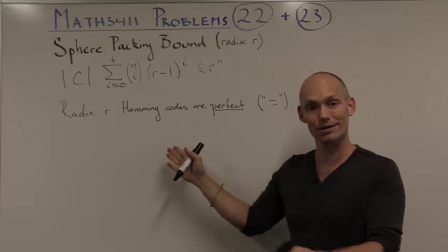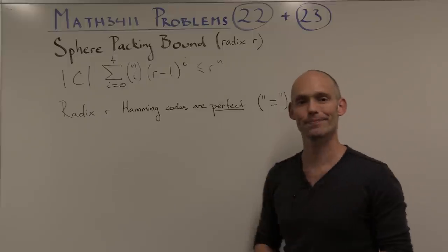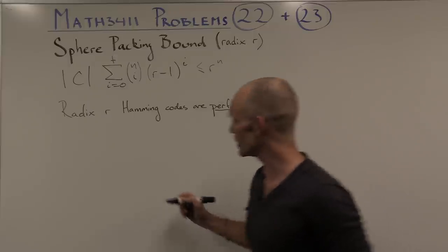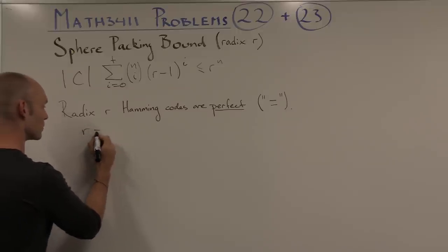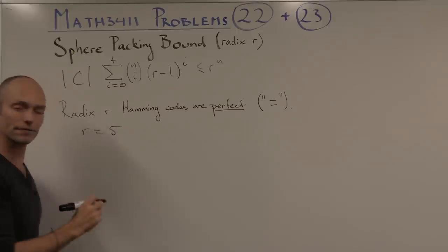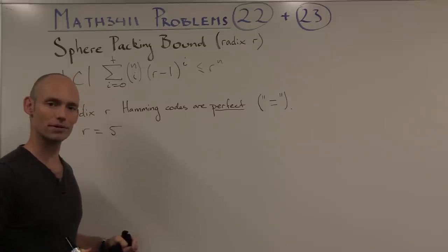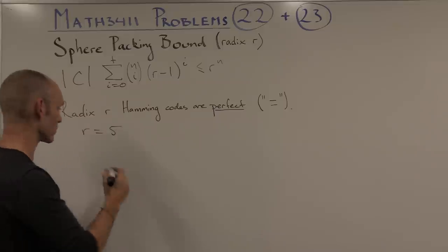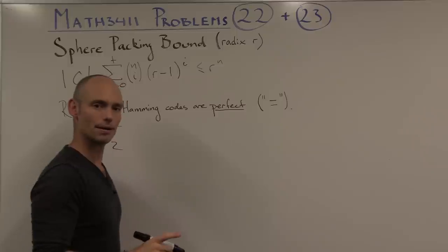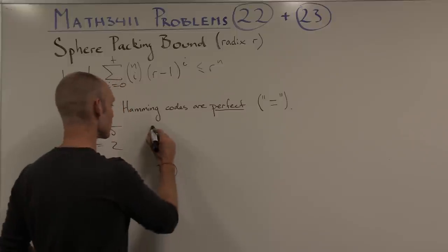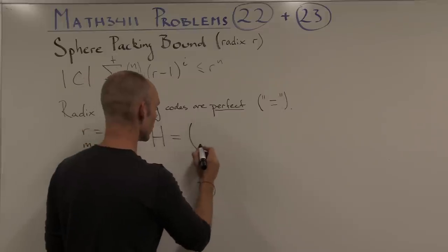So first of all, what's a radix r Hamming code? And that leads us to problem 23. In that problem, we have to construct a radix r Hamming code for the value r being equal to 5. And we have to construct the parity check matrix for it with two rows, or in other words, two check bits. So m is 2.